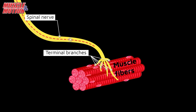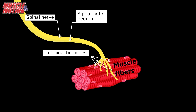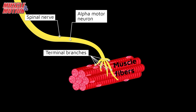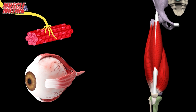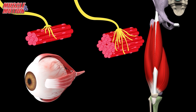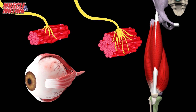When a motor neuron fires, all the muscle fibers in the motor unit contract at the same time. The size of a motor unit varies from just a few fibers in the eye muscles — enabling precise movements — to over a thousand fibers in the large leg muscles, enabling powerful movements.